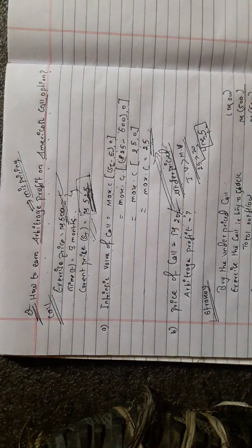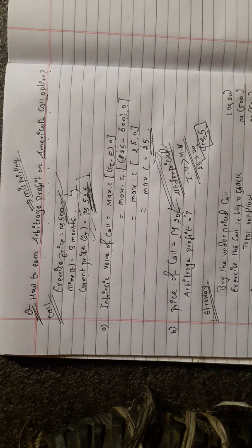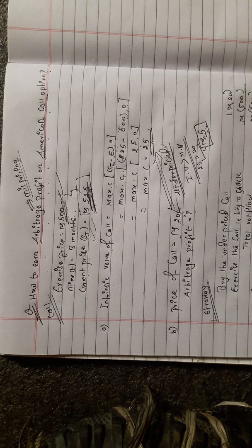If the underlying asset is in a mispricing condition, a situation is created for profit. If the underlying asset price goes up or down, then the profit is assured.